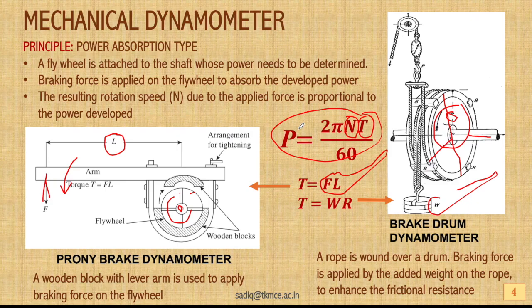If a device is more powerful and you apply a defined torque, there will be a higher resulting rotation speed. If the power of the device is much higher, for the same torque applied the speed will also be higher. Conversely, for a low-power device, applying a torque may cause the speed to come to a halt. So depending on the force applied and the resulting speed, we can compute the power capability of that device.